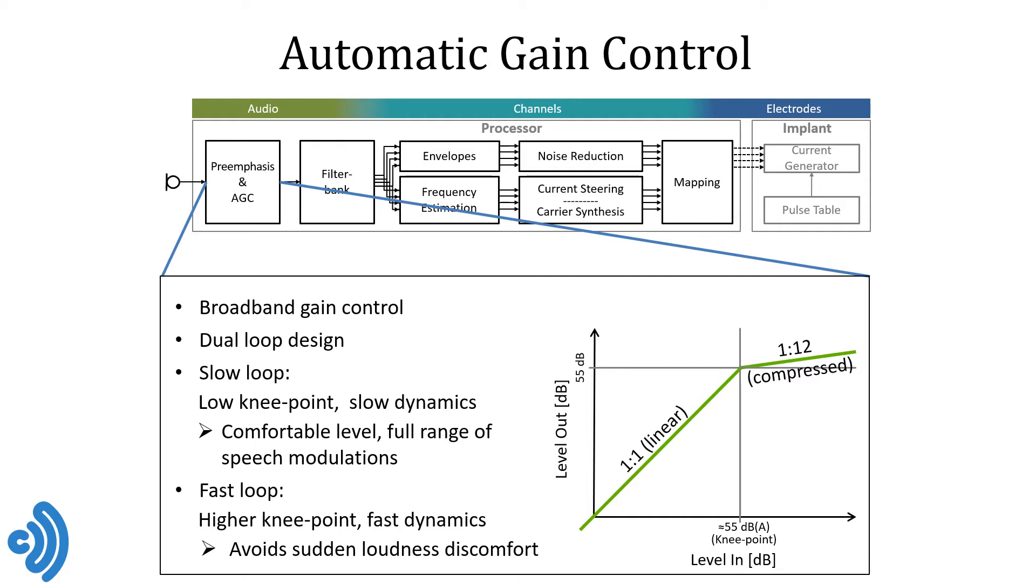After pre-emphasis, we apply automatic gain control to ensure that we can represent the dynamic content of the input signal across a wide range of levels, even though the electric stimulation dynamic range of CI users is much smaller. Gain control in SPEC-RES is applied to the broadband audio signal and there is no frequency specific dynamic compression. So it's really very much like a self-operating volume knob that keeps the signal at a moderate comfortable level. We use a dual loop gain control algorithm with a slow loop that starts compressing at levels around 55 to 60 dB and which because of its slow dynamics does not diminish the range of short-term intensity fluctuations typical for speech. In case something unexpected and loud happens, we have a fast loop that takes over in instances like that and reduces the gain immediately to protect the user from loudness discomfort.